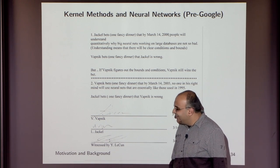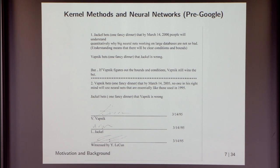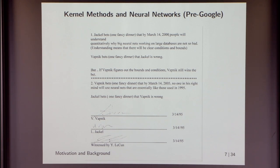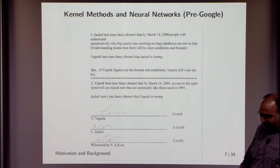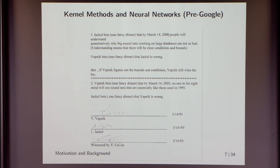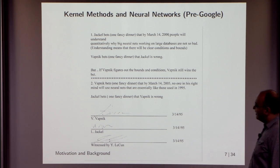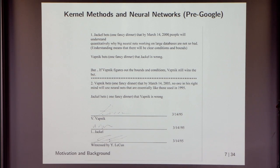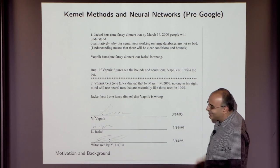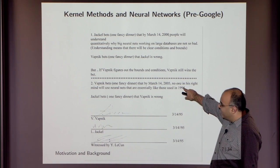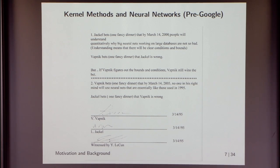There are some insider jokes between kernels and neural nets. In the mid-1990s these methodologies were seen as competitive. There was a bet between Larry Jackel, head of AT&T Research, and Vapnik. Jackel bet that by March 14, 2000, people would understand qualitatively why big neural nets on large databases are not so bad. Vapnik — the kernel guy — bet Jackel was wrong. Jackel probably lost the bet, and Vapnik said no one in their right mind would use neural nets like those from 1995.